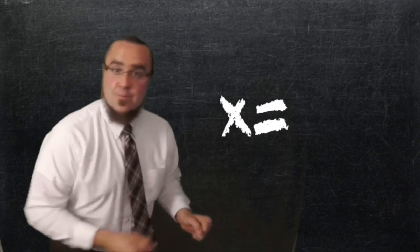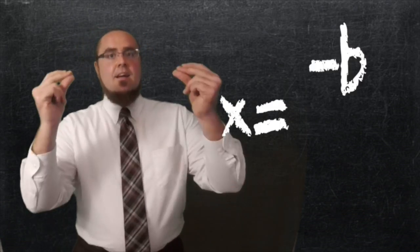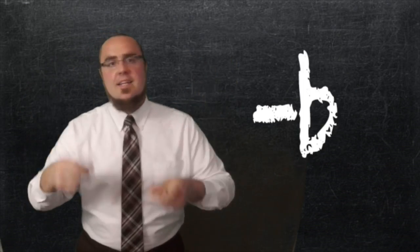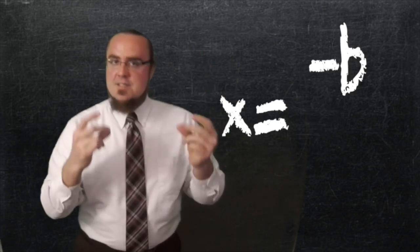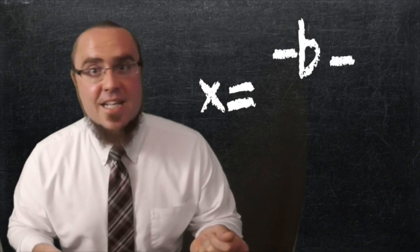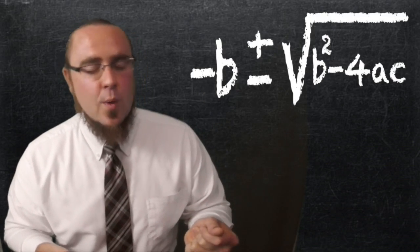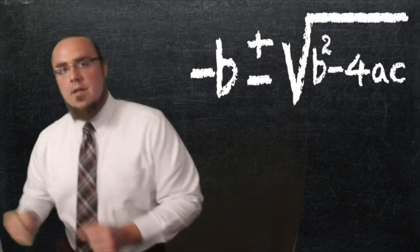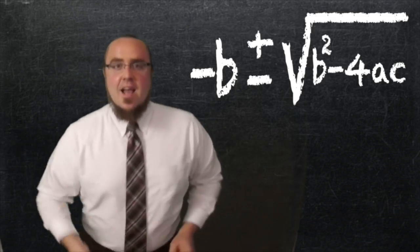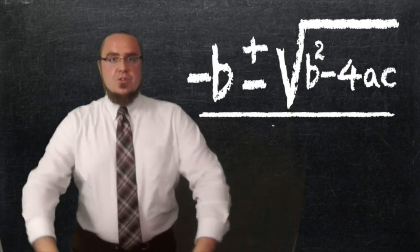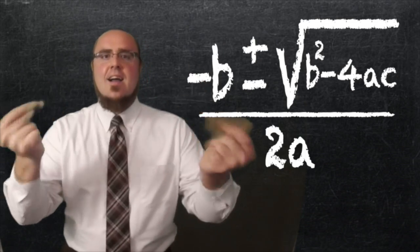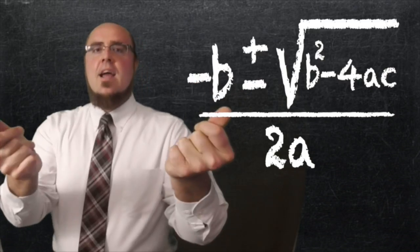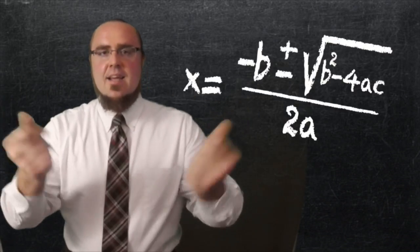x equals negative b, plus or minus the square root of b squared minus 4ac, over 2a.